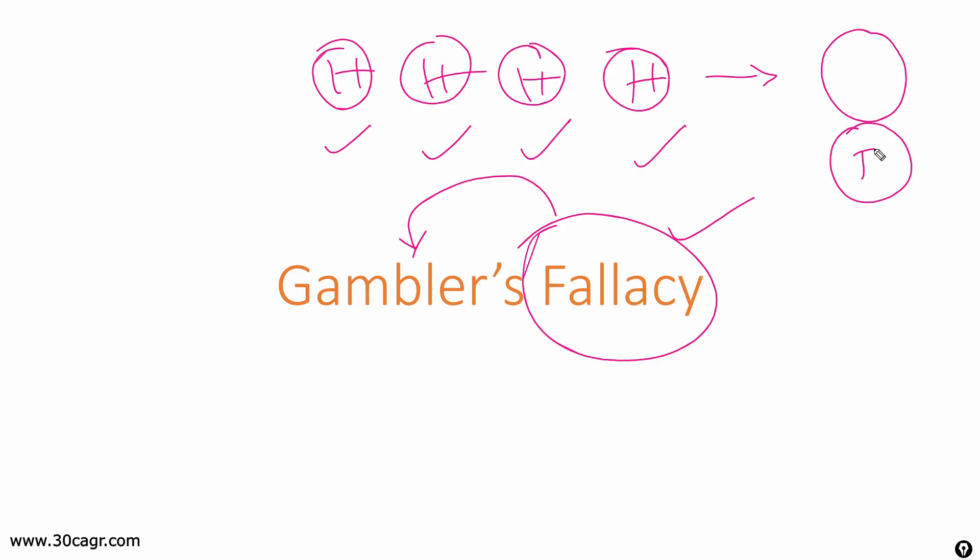What they tend to believe is if there are series of events giving same kind of output, then the next output would be different. This is what their belief is, and this is exactly what statistics and probability negates. It says that there is no such rule or concept that says if a series of events have same output then the next instance will give different output.